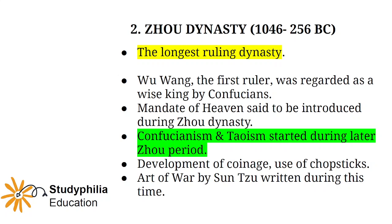Confucianism and Taoism — the two most important philosophies of China — were introduced during the later Chou period. Development of coinage and use of chopsticks were also introduced. The book 'Art of War' by Sun Tzu was written during this time.